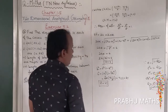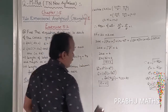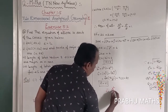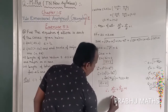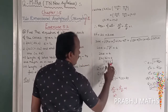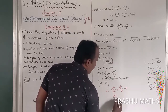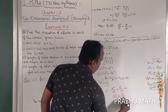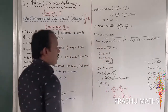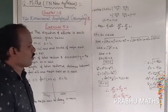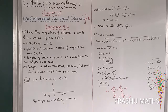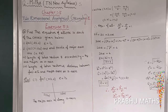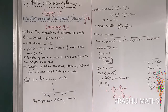Therefore, A value is found. Next, B value is found. The general form of the ellipse is x squared by a squared plus y squared by b squared equals 1. Substituting: x squared by 36 plus y squared by 27 equals 1. That is the ellipse equation: x squared by 36 plus y squared by 27 is equal to 1. That is the answer.